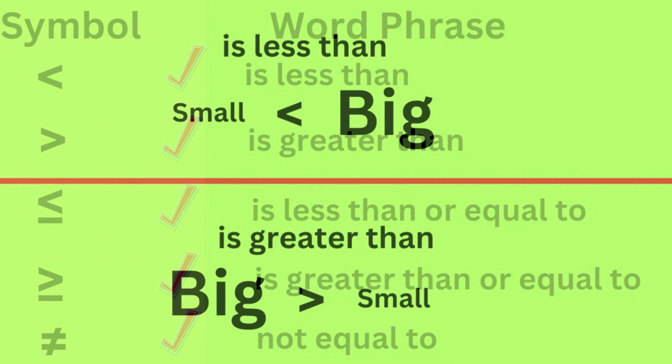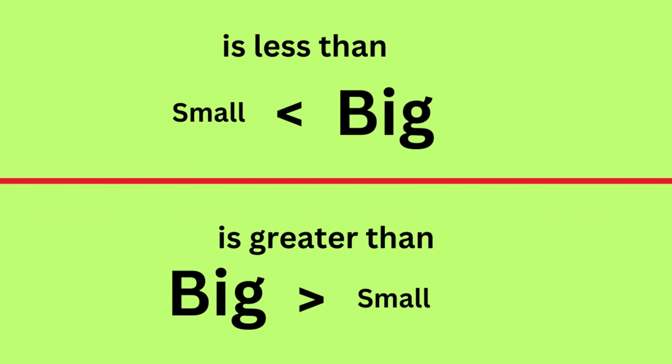An easy way to remember which symbol is less than or greater than is to remember the smaller end of the symbol is less than the greater end, and the greater end is greater than the smaller end.